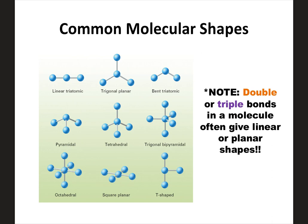Anytime you have double or triple bonds in a molecule, they're often going to give a linear shape or some form of planar shape. If you have three things attached with a double bond, it could end up being trigonal planar. With more things and a double bond, you might end up with a shape just called planar because everything is flat. With a triple bond, depending on the number of atoms, it might just be a linear molecule, since these types of bonds don't allow for much bending.